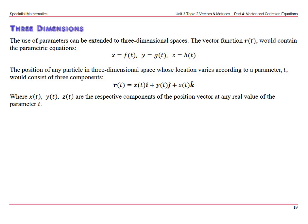So just an extension on that two-dimensional space. x(t), y(t), z(t) are the respective components of the position vector at any real value of the parameter t.